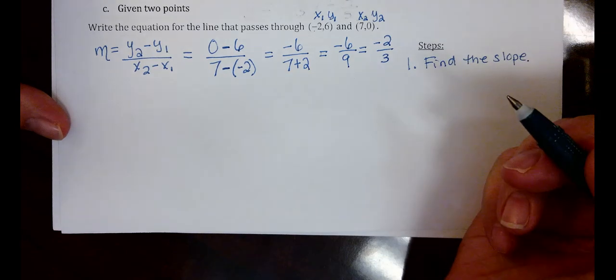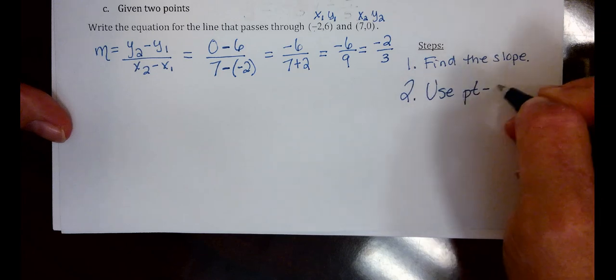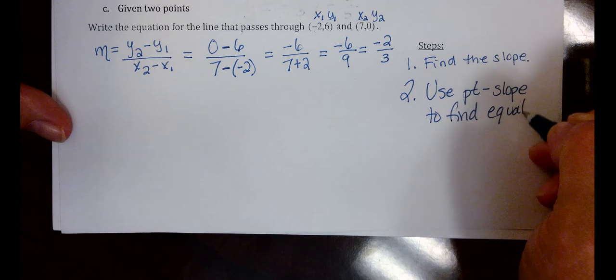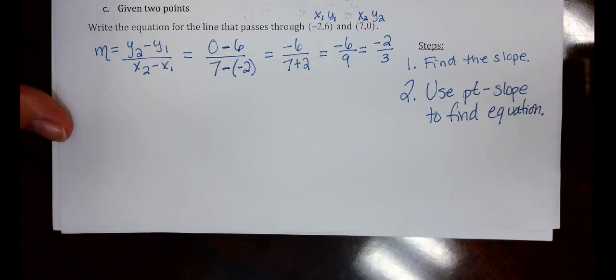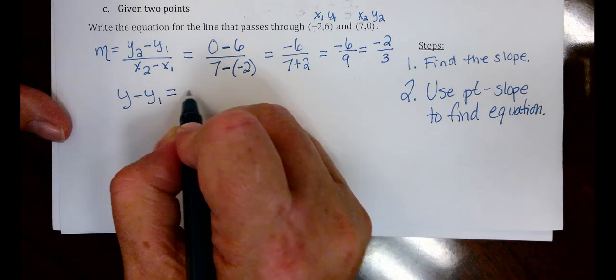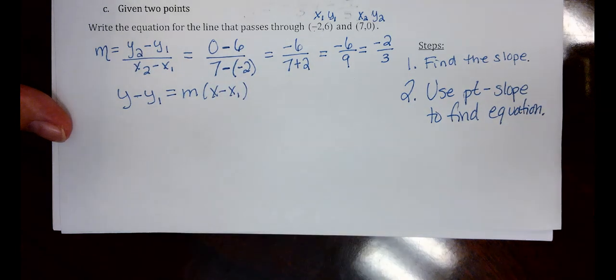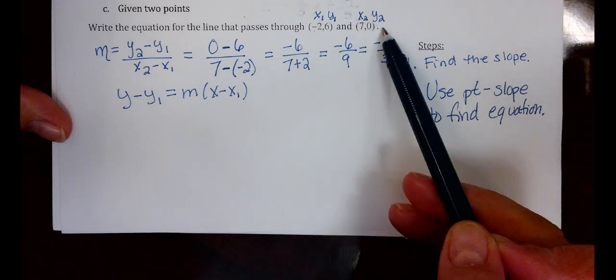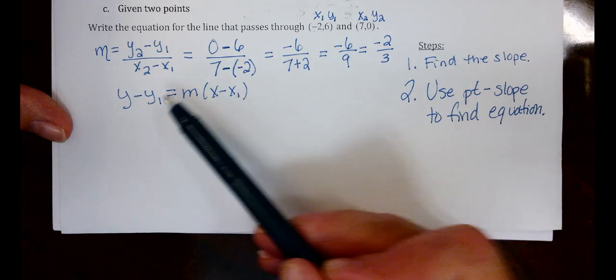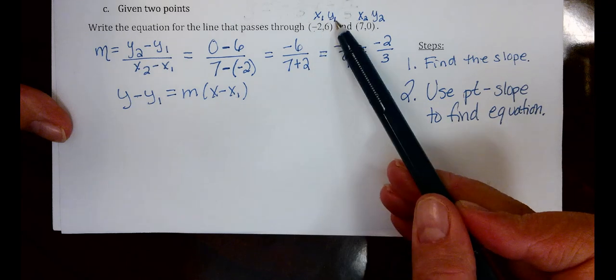So our slope is negative 2 thirds. Our second step is to use point slope to find the equation. So let's remember point slope. Point slope is the one that starts out Y minus Y1 equals M times X minus X1. And in this problem because we're given two different points, you could technically use either point to plug in here at X1 and Y1. However, I'm just going to go ahead and use the ones that are labeled X1 and Y1 to make things easier.